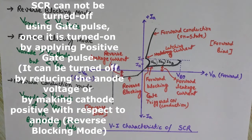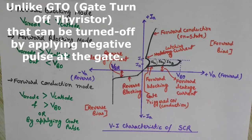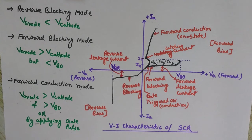That covers the structure, working, and VI characteristics of Silicon Controlled Rectifiers. I hope you understood all the concepts. In the next videos we will see other members of the thyristor family like GTO, IGBT, etc. If you liked the video, please click on the like button, share it, and subscribe to my channel Engineering Made Easy for more such videos.